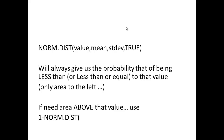NORM.DIST only gives you area to the left. If you need area above a value — area to the right — you use 1 minus NORM.DIST in your cell. Since the total area under the curve adds up to one, one minus the area to the left gives you the area to the right. The two areas together must add up to one.